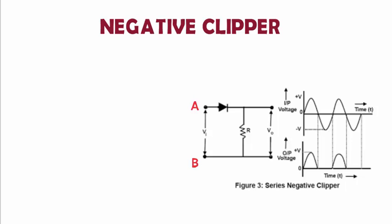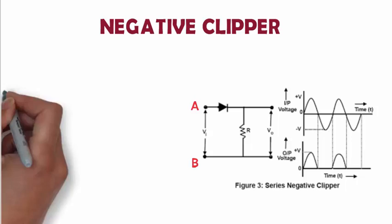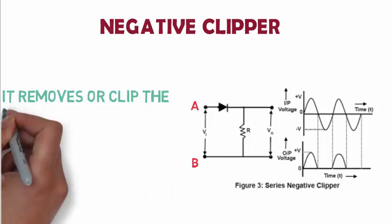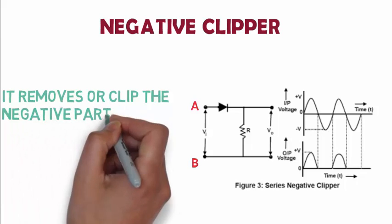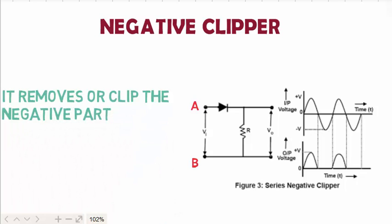Thus there is no voltage drop across the resistors during the negative half of the cycle, so we can conclude that the circuit removes or clips off the negative part.